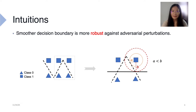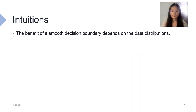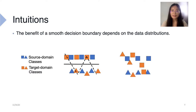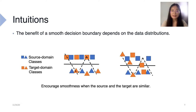The robust decision boundary is what we want for transfer learning. The benefit of smoothness depends on the data distributions. On the left-hand side, the source domain and target domain have similar distributions, and the smooth decision boundary works well for both, whereas the zigzag one is vulnerable to small distributional shift. On the right-hand side, the source and target have very different distributions, and it is not clear whether smoothness has any benefit at all. Recall that the prompt has very few parameters, but we want to use it to control a very large model. If we don't have enough capacity to produce a smooth decision boundary everywhere, we must focus on cases when the source and target domain distributions are similar.